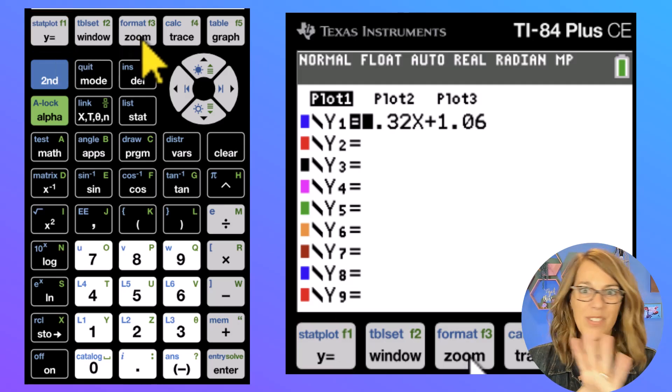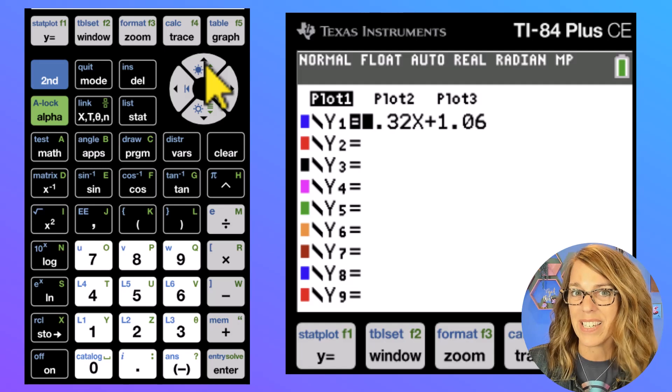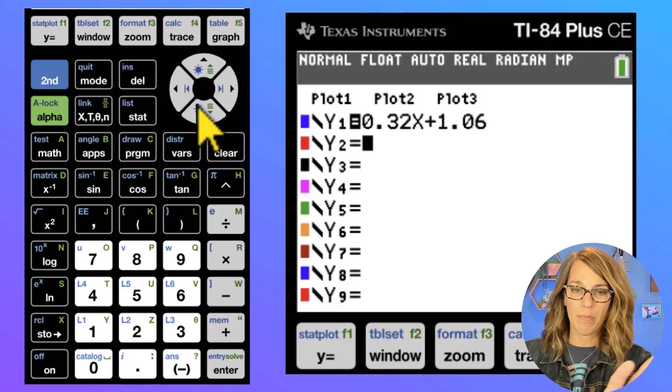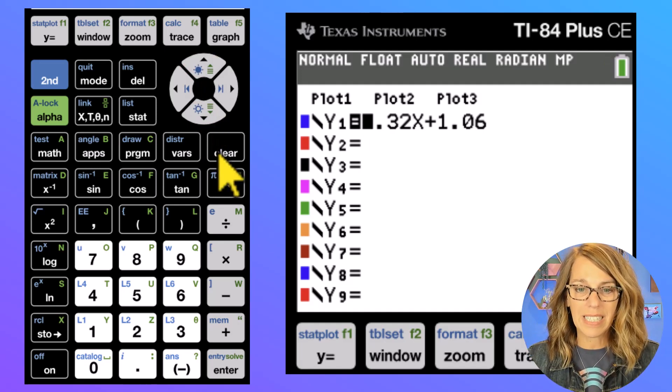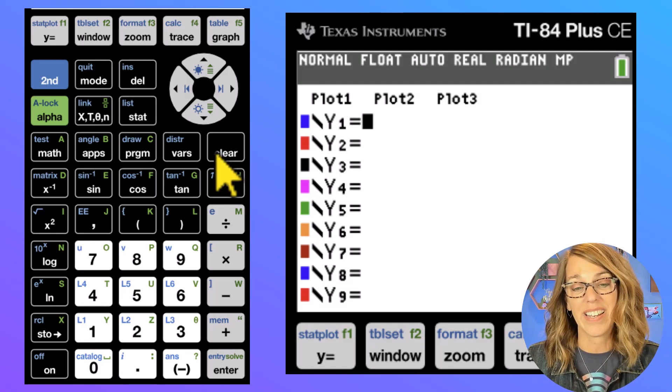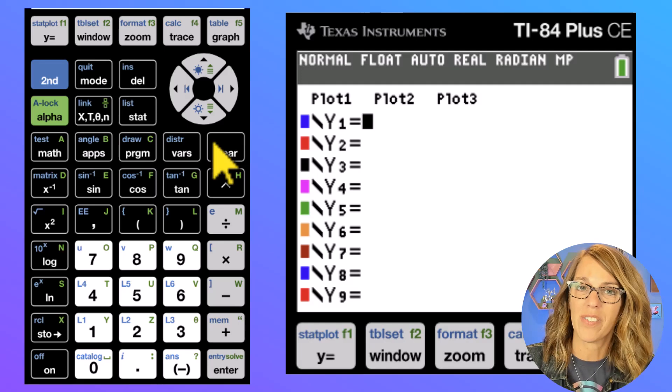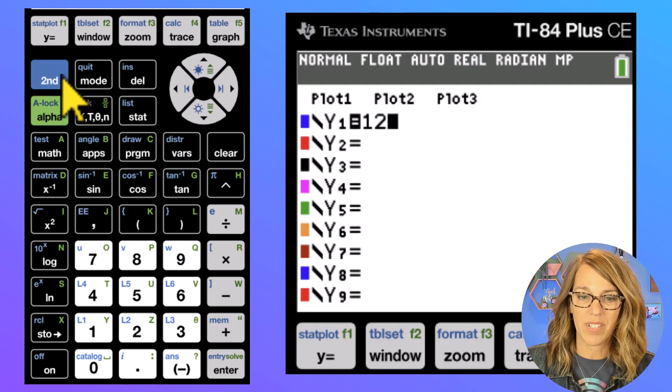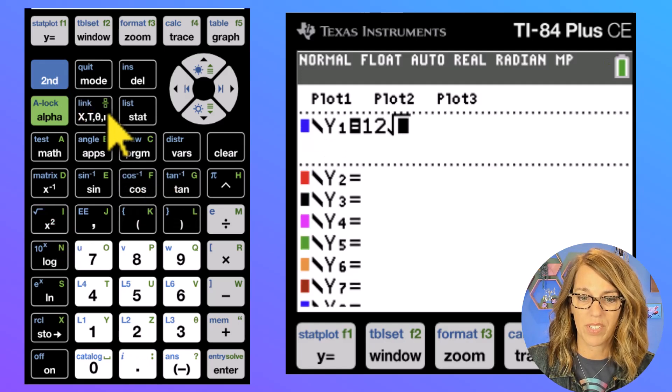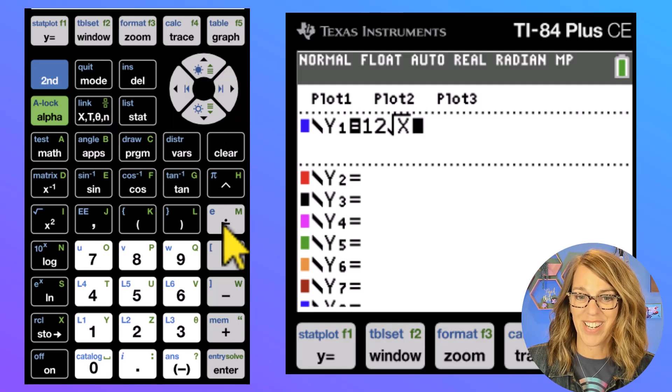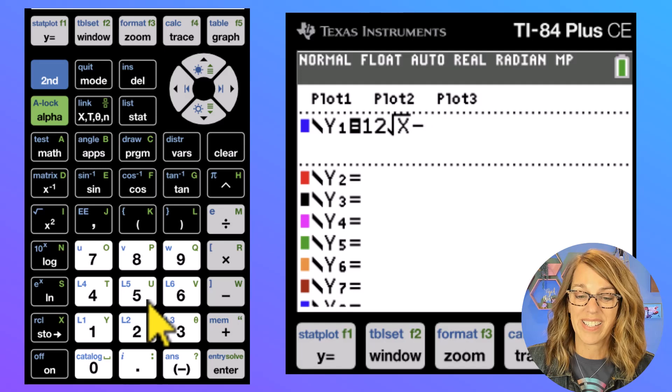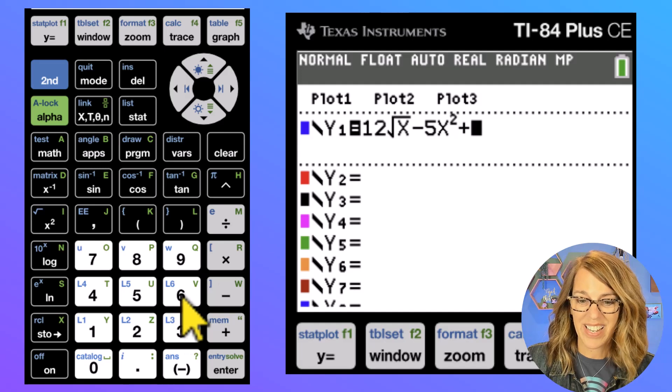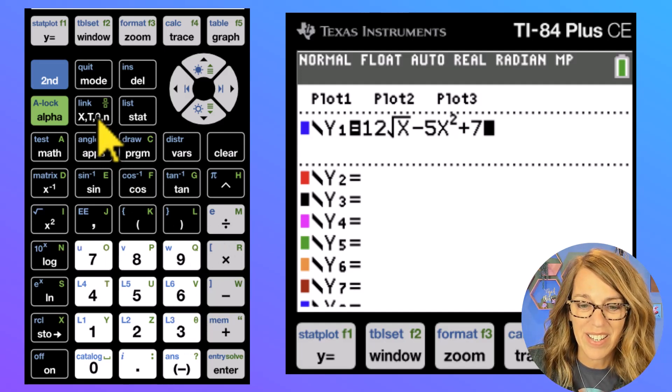Now I've got plot one on. I do not want a statistical plot. Yours probably isn't chosen, but mine is. So I'm going to arrow up and then hit enter to unhighlight. Okay. So none of the plots are highlighted. I am going to clear, just hitting the clear button, clear the function that I had in there. So this is Y equals. We can imagine this as f(x) equals. So we have 12 times the square root, so second square root of x. Let's arrow to get outside of the square root. And then we're going to do minus 5x² plus 7x.